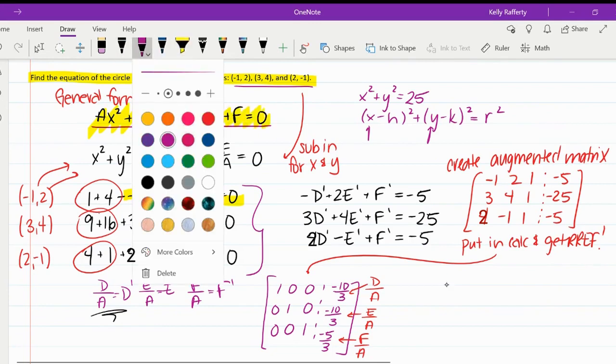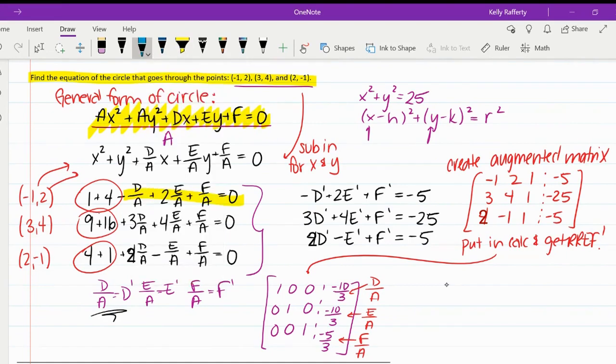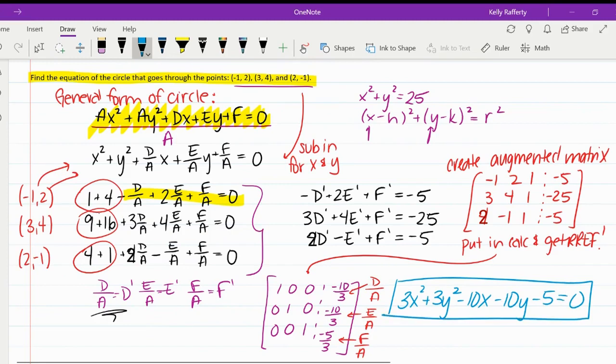So since A equals 3, I'll write out what my answer would be. We would get 3x squared, 3y squared. Here's D, that negative 10. E is also negative 10. And F is negative 5. And there's our equation of our circle.